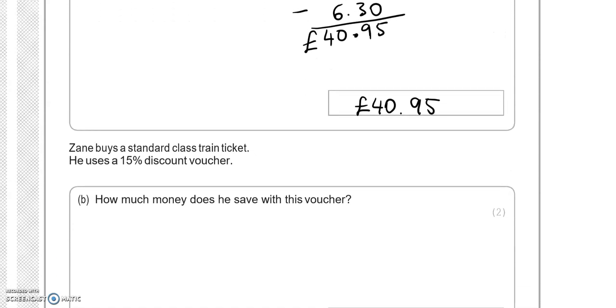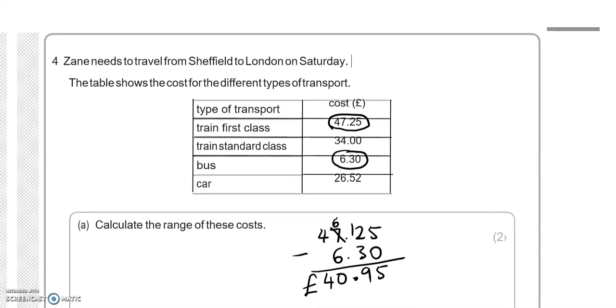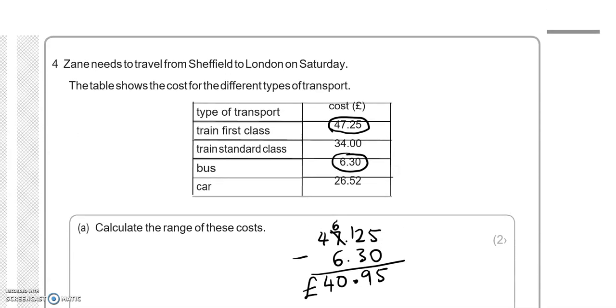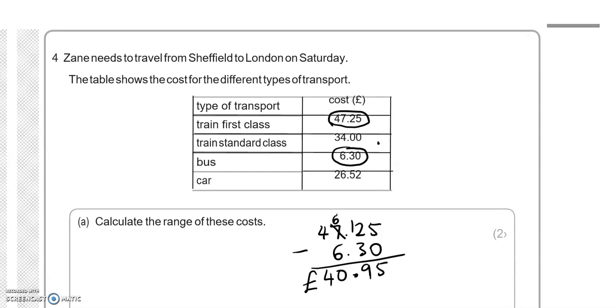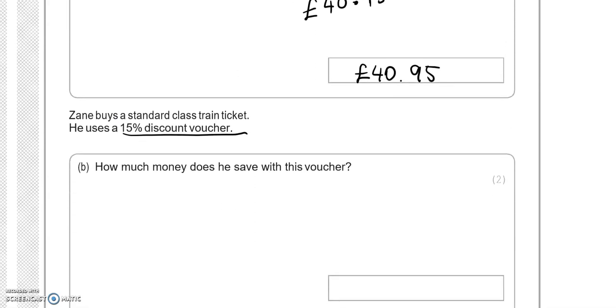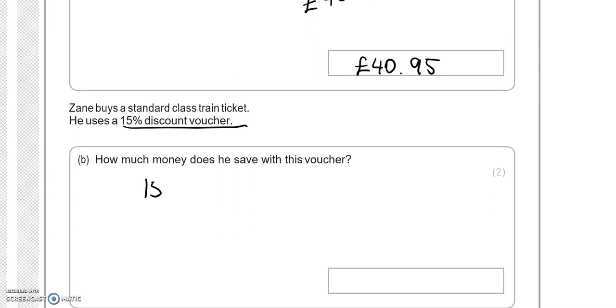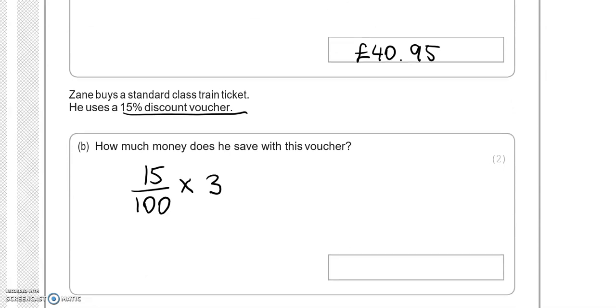Zane buys the standard class train ticket. He uses a 15% discount voucher. How much money does he save with his voucher? So having a look at the price, the standard class train ticket is £34. So 15% of £34. That would be the right way to do with the calculator but we haven't got a calculator.